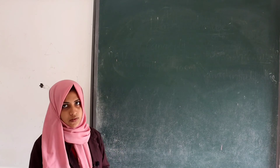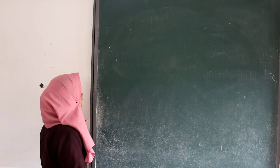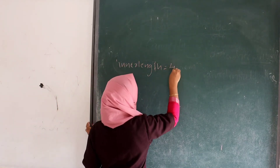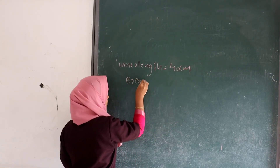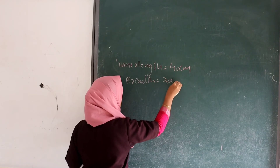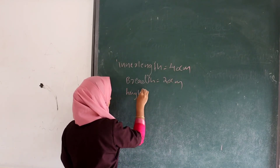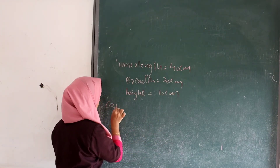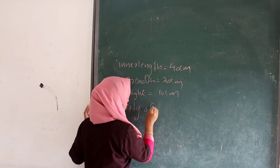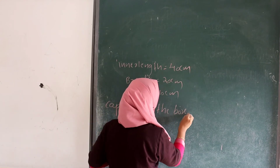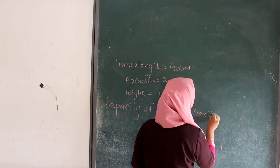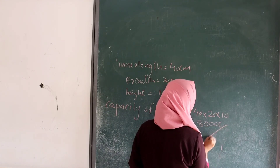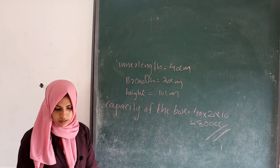The volume of this box is called the capacity of the box. The inner length is 40 centimeters, breadth is 20 centimeters, and height is 10 centimeters. So, the capacity of the box is 40 × 20 × 10 = 8000 cubic centimeters.